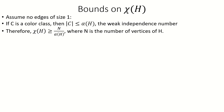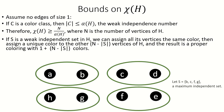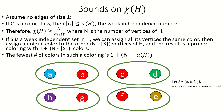Finally, also using the weak independence number, we can construct an upper bound for the chromatic number of a hypergraph. Notice that if S is a weak independence set in a hypergraph H, then we can assign the same color to all of the vertices in S, and a unique color to each vertex not in S, and the result would be a proper coloring of H. The number of colors used in such a coloring is 1 plus the number of vertices not in S. The larger we make S, the fewer colors used in this coloring. If S is a weak independent set of maximum size in H, then it has size alpha of H, meaning there are n minus alpha of H vertices not in S, so the coloring we just described would use 1 plus n minus alpha of H colors. This gives us our upper bound for the chromatic number. For the hypergraph shown here, this upper bound is greater than the actual chromatic number, which is just 2.